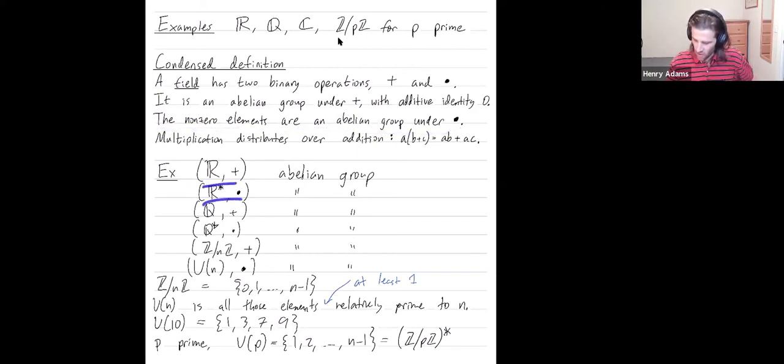That works for all of these, and it works for Z mod pZ when p is prime, because Z mod pZ is an abelian group under addition. You remove the single element zero, and you get this group Up, which is an abelian group under multiplication.